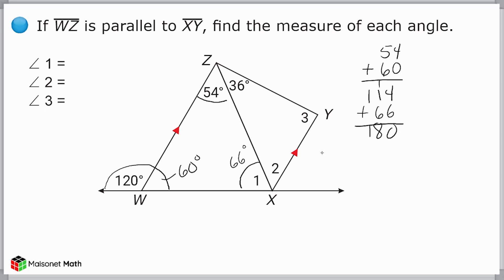Now, it is given in the problem that line segments WZ and XY are parallel to each other. What we should notice is this line right here cuts across that pair of parallel lines. We would say that this line is a transversal to those parallel lines.